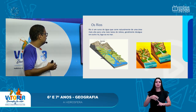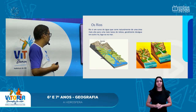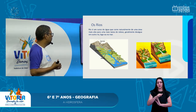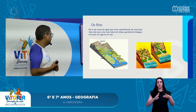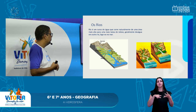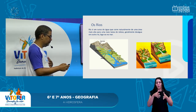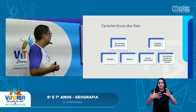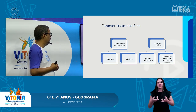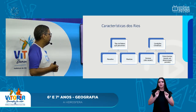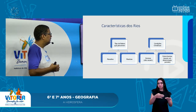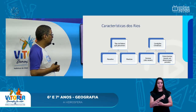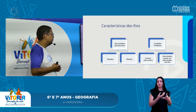Os principais elementos do rio são a nascente, os subafluentes, os afluentes que formam o rio principal e a foz ou embocadura, que é onde o rio deságua. Em relação ao tipo de relevo que percorrem, os rios podem ser de planalto ou de planície. Em relação às condições climáticas, eles podem ser perenes — aqueles que não secam — ou intermitentes — que secam em determinado período.